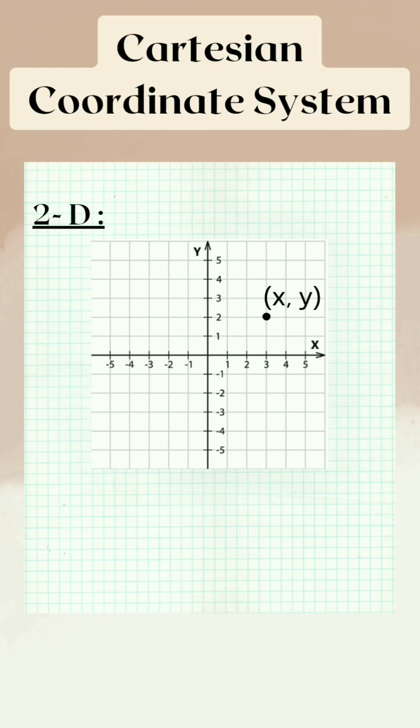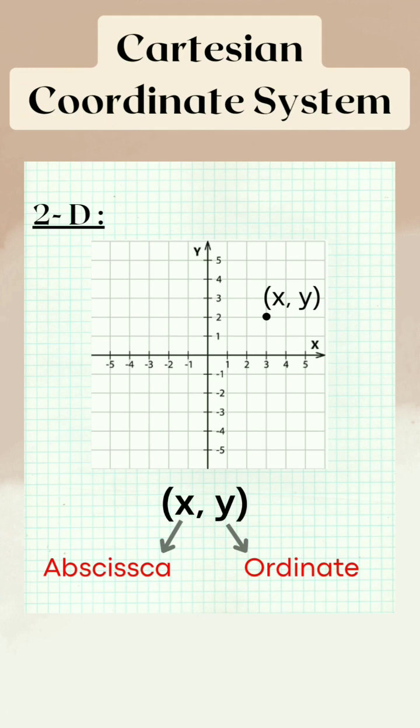In two-dimensional, position of a point is denoted by x, y where x is abscissa and y is ordinate.